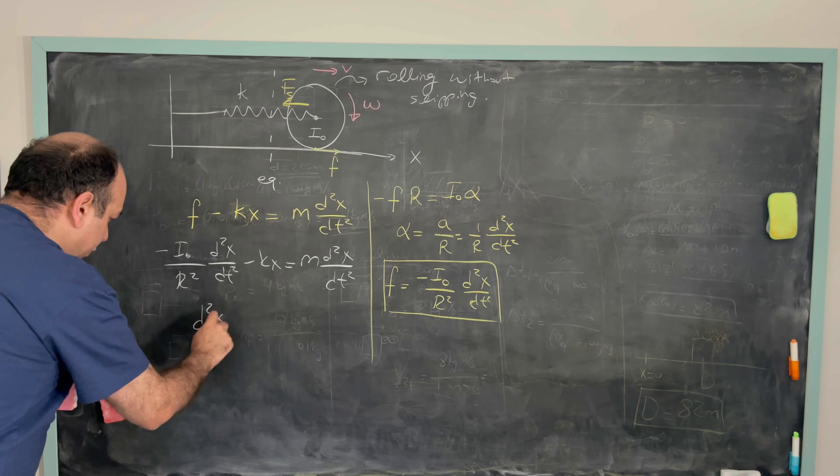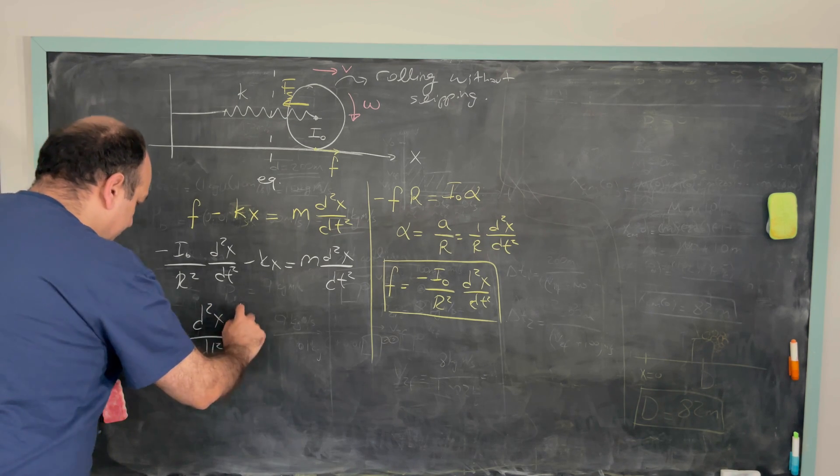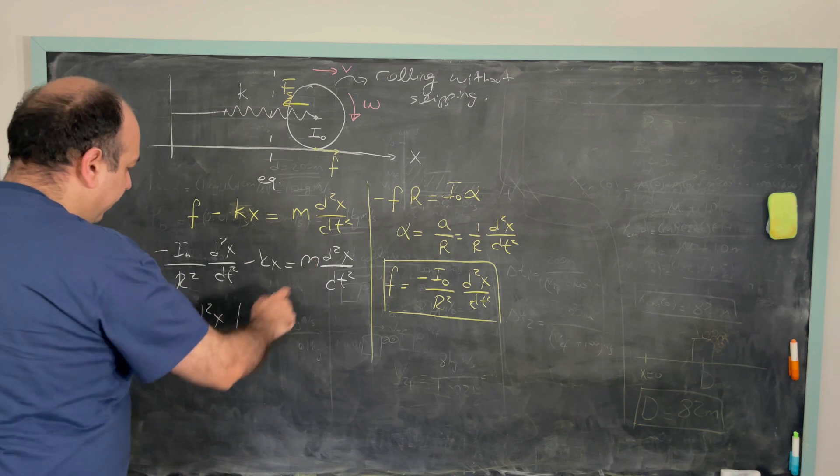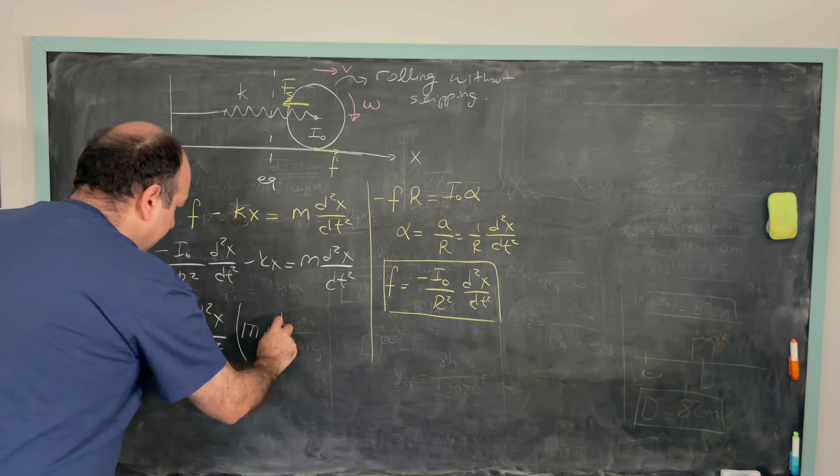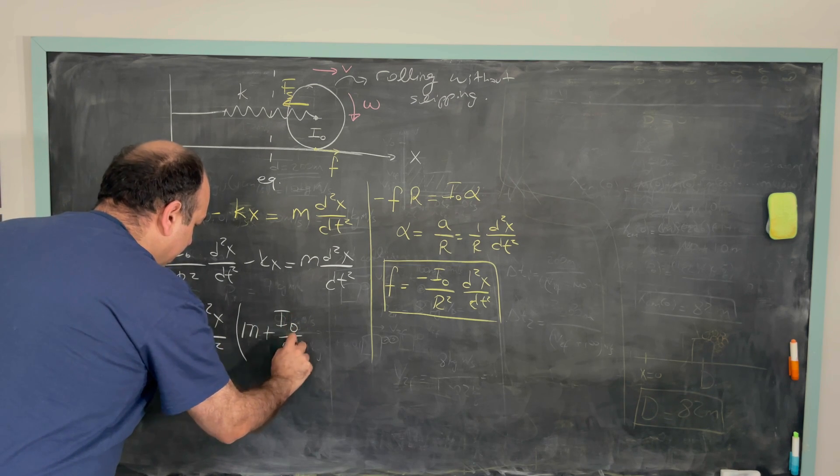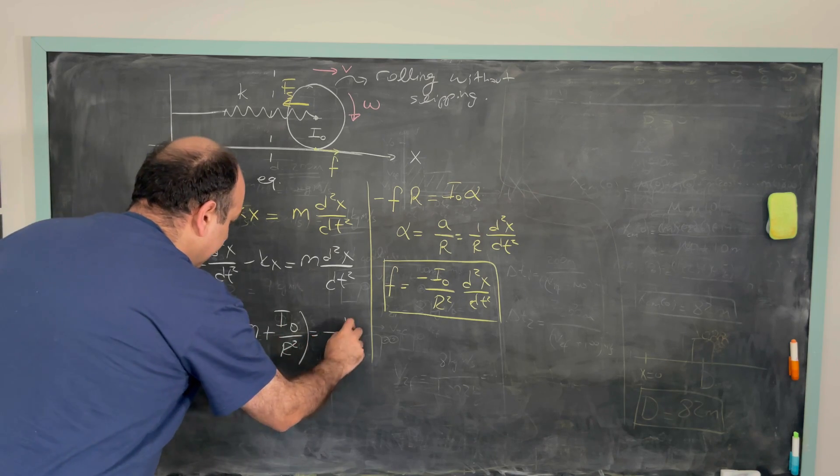So if you write d square x dt square, just acceleration, linear acceleration, I'll have m plus, I'll put this term on the other side, I'll have i0 over r square. So this should be equal to minus k times x.